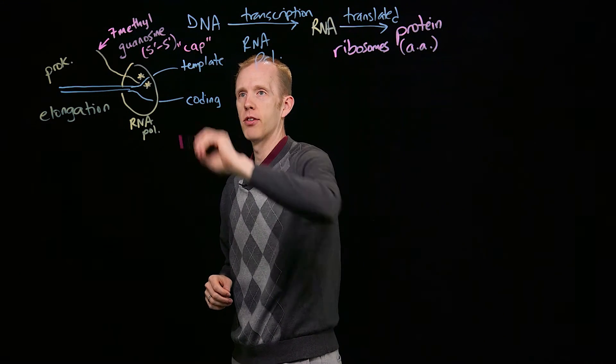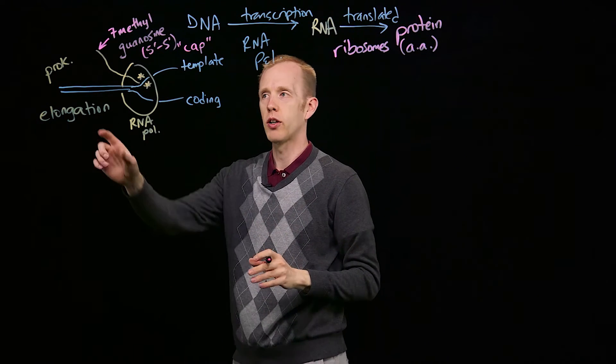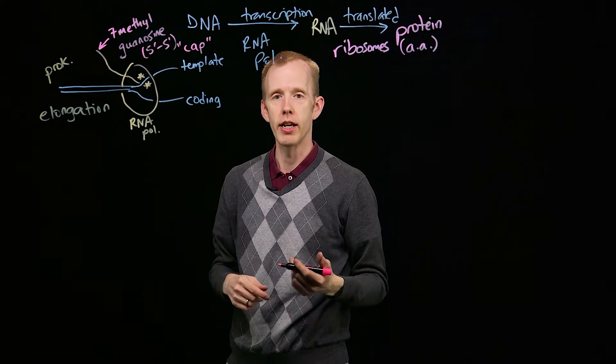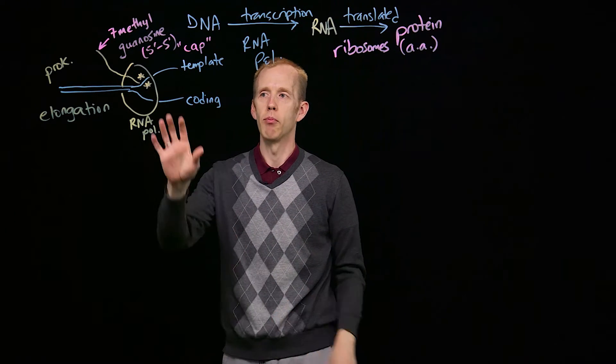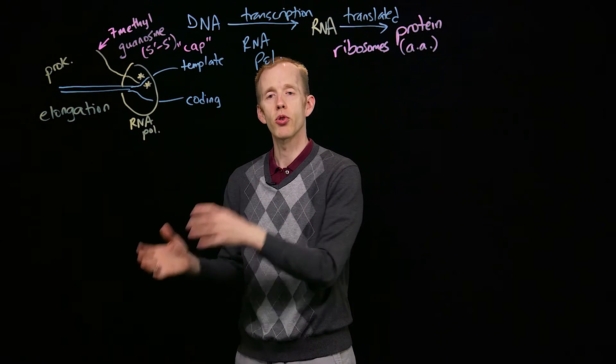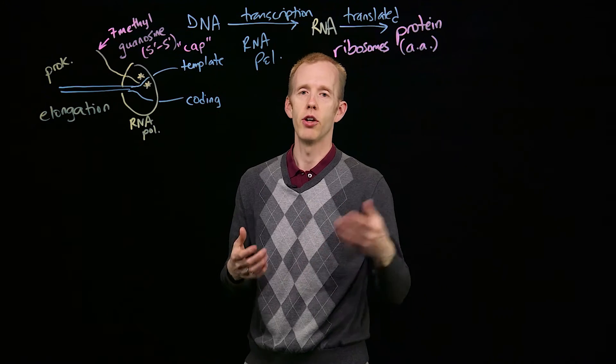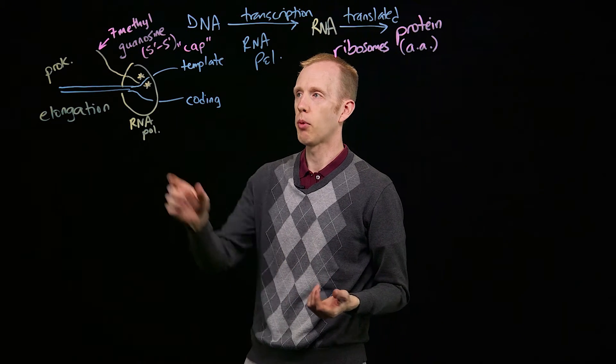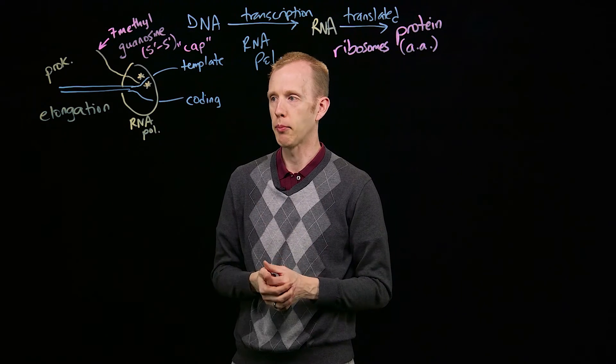The 5' cap protects the 5' end of this single-stranded molecule of RNA from being degraded. That's one way the cell controls how much of this gene gets transcribed and how many messenger RNA molecules can accumulate to be translated into proteins. Part of that process is protecting this RNA molecule from undergoing rapid degradation.